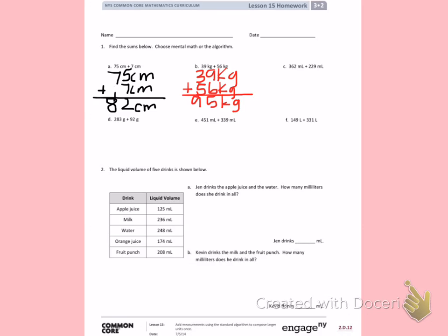Letter C. 362 ml plus 229 ml. When the numbers get larger, it's a better choice to use the standard algorithm, not try to do it mentally in your head. 9 plus 2 is 11. 6 plus 2 is 8, plus 1 is 9. 3 plus 2 is 5, which gives me 591 ml.